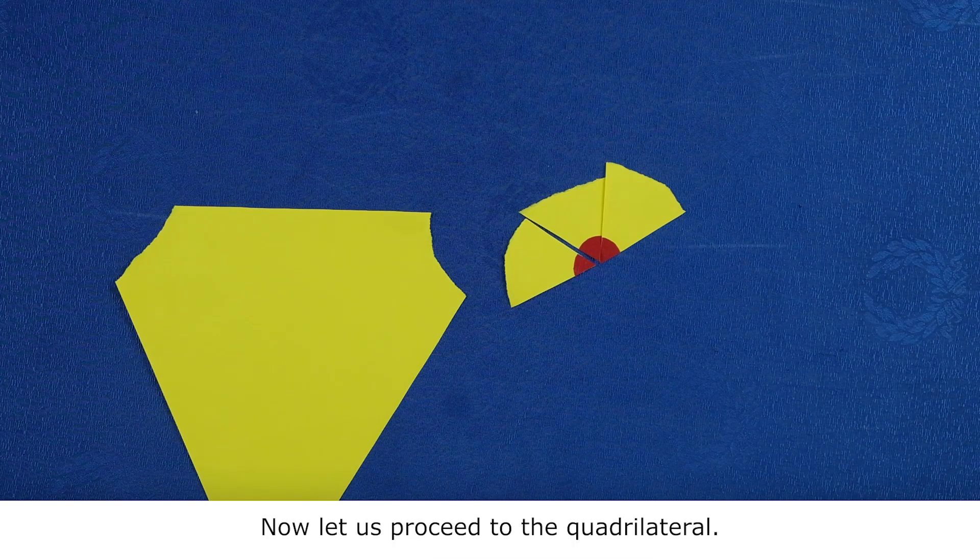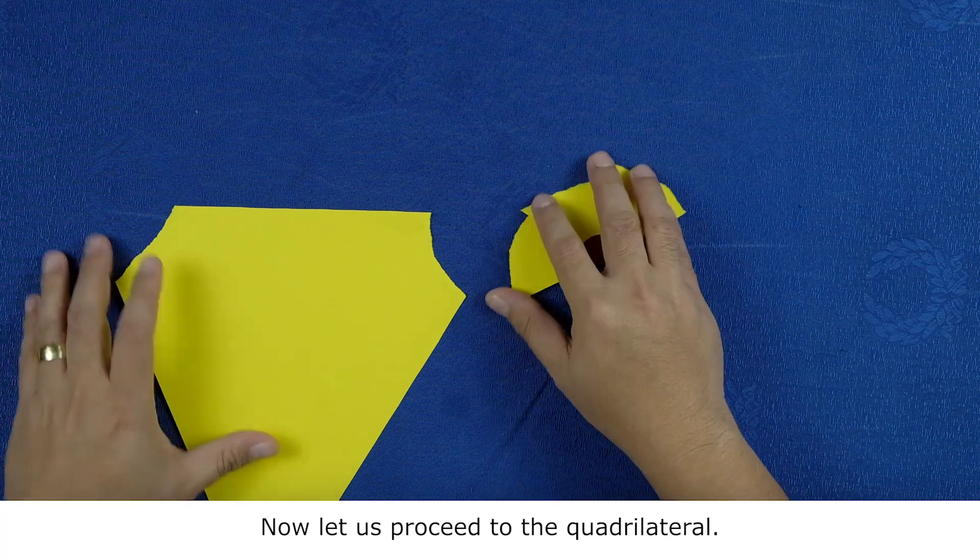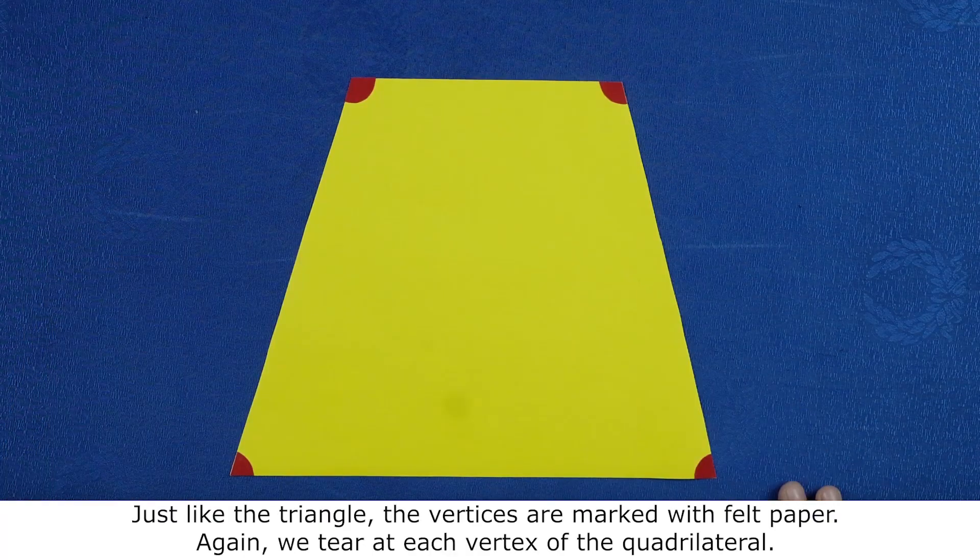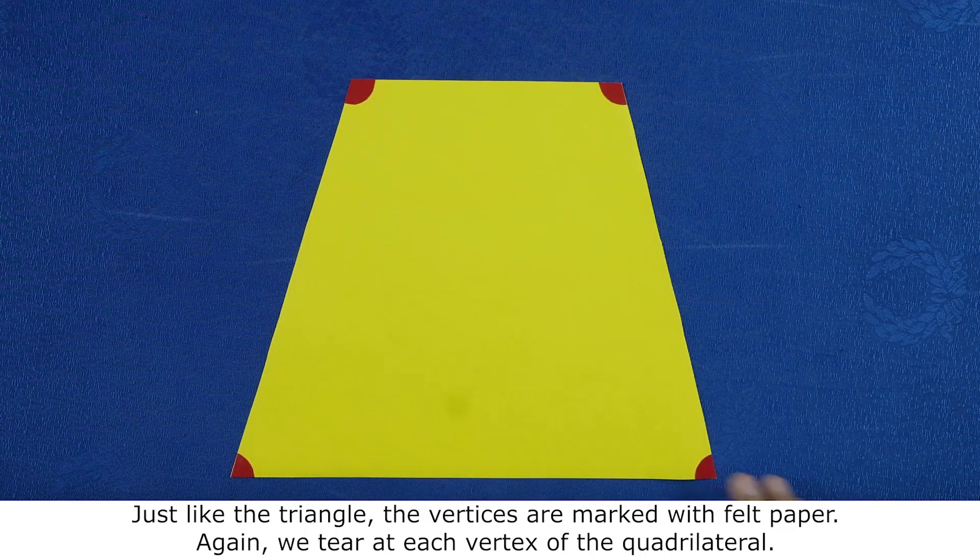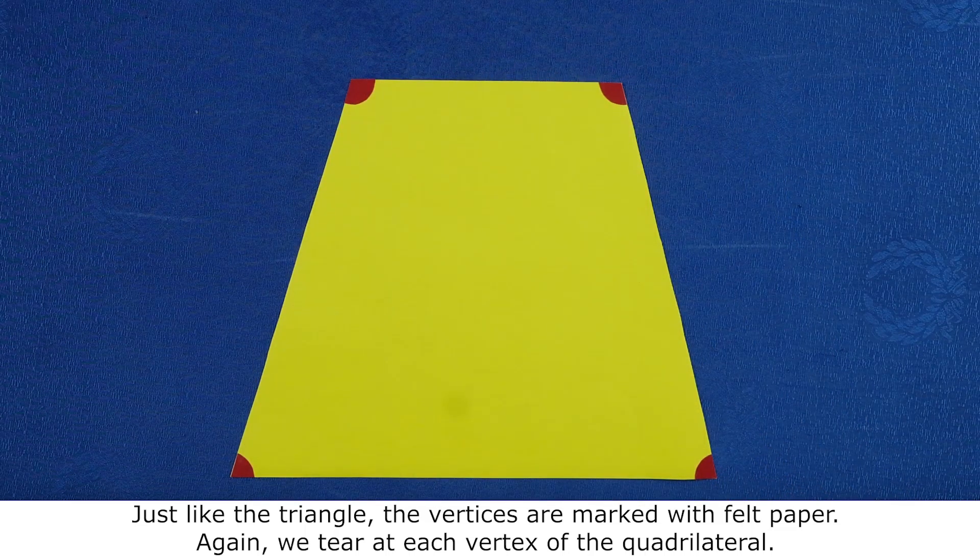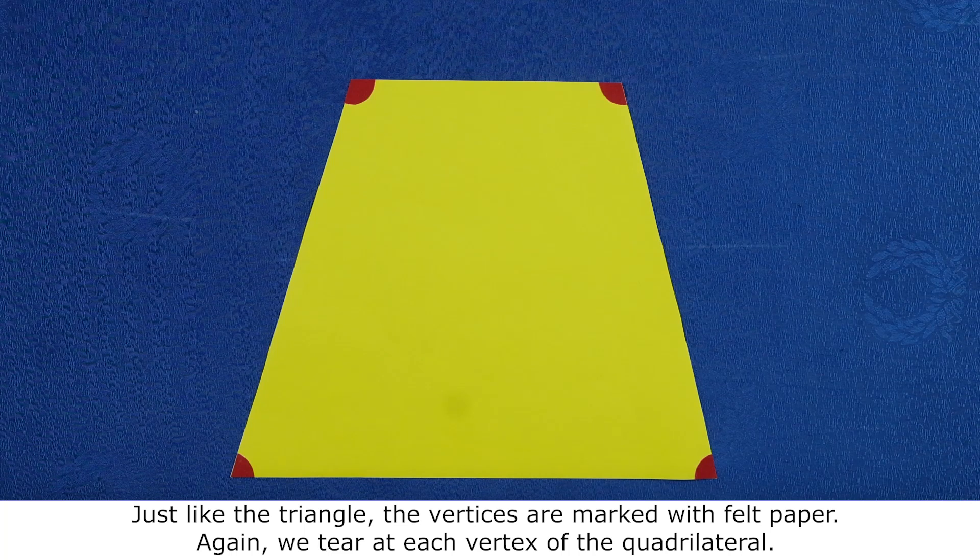Now, let us proceed to the quadrilateral. Quadrilateral has four vertices: one, two, three, and four. Just like the triangle, the vertices are marked with felt paper.